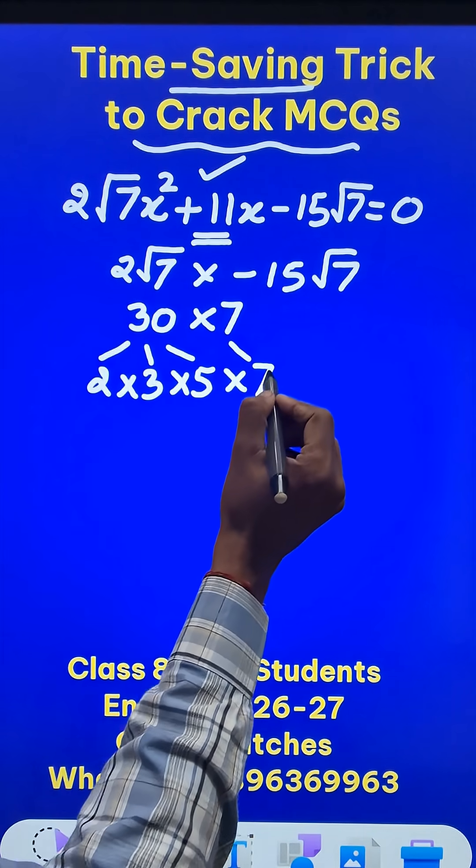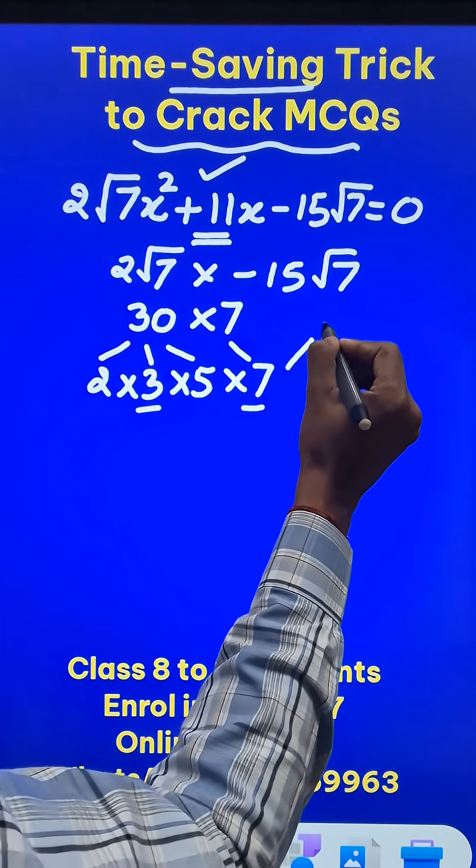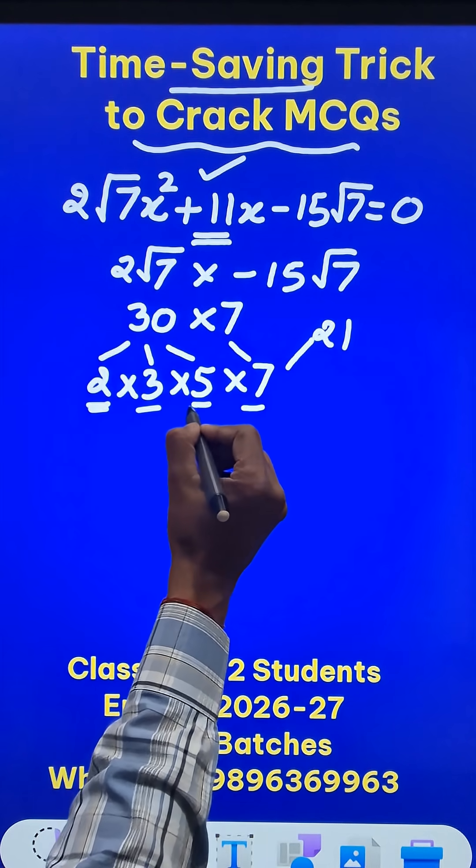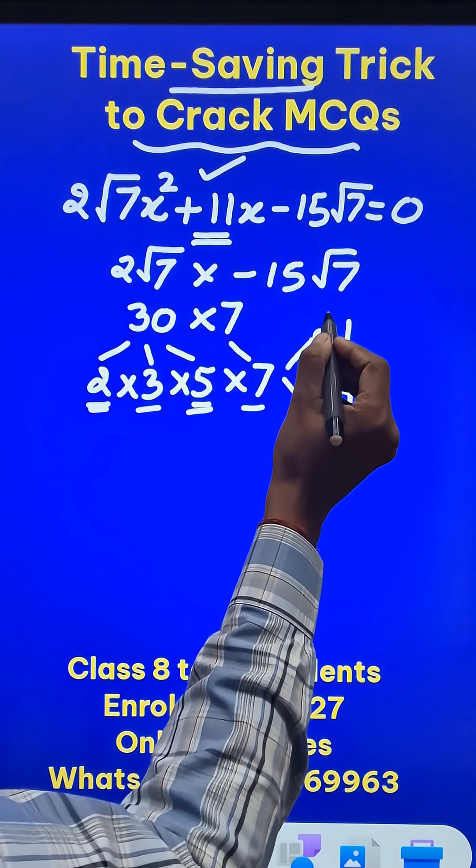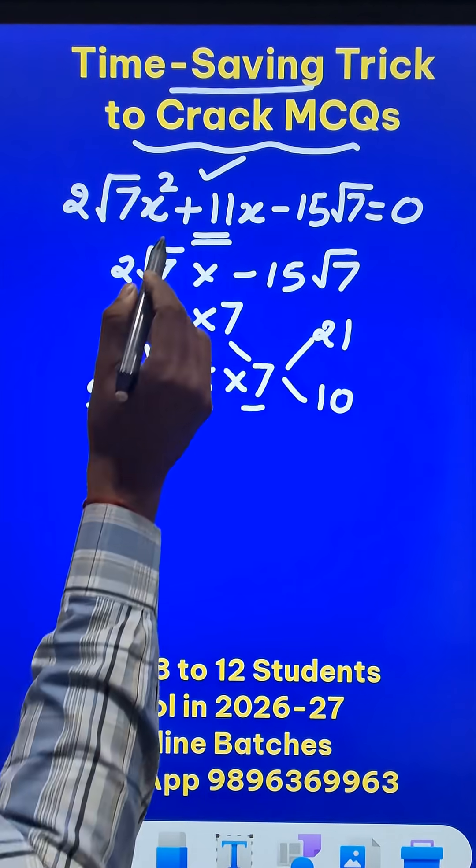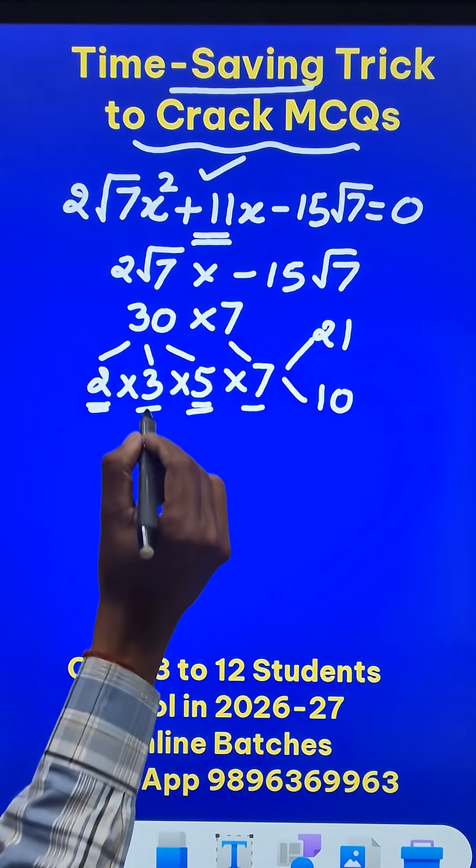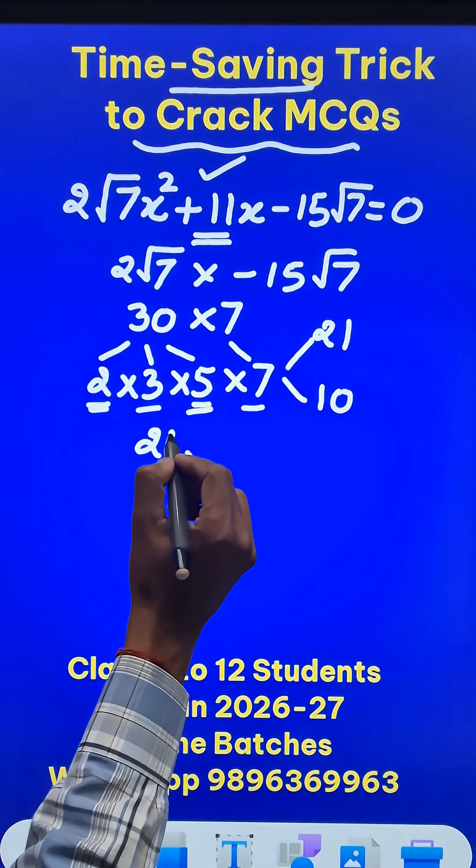I can very easily find out that 3×7 is 21 and 2×5 is 10, because 21 minus 10 will give me 11. So what are the middle term split factors? They are plus 21 and minus 10.